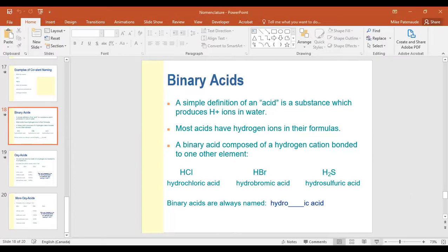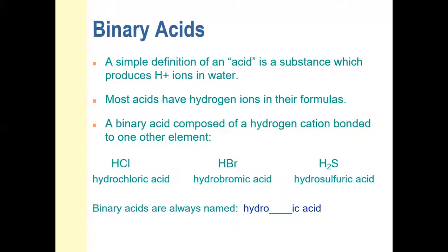We're looking at acids and then we're done with nomenclature. We'll look at this and then practice it a bit. Have your data booklets open to page six — we're going to refer to it. So an acid: what is an acid? In grade 12 chemistry, acids and bases is like six weeks of the course. Right now we're just looking at how to name acids.